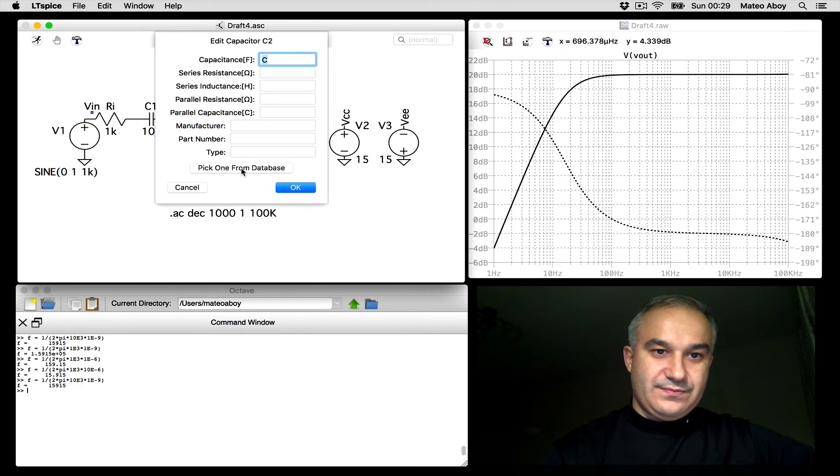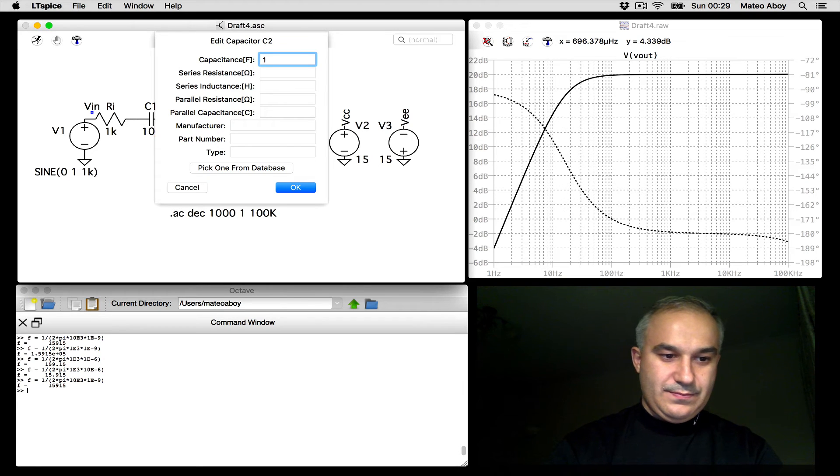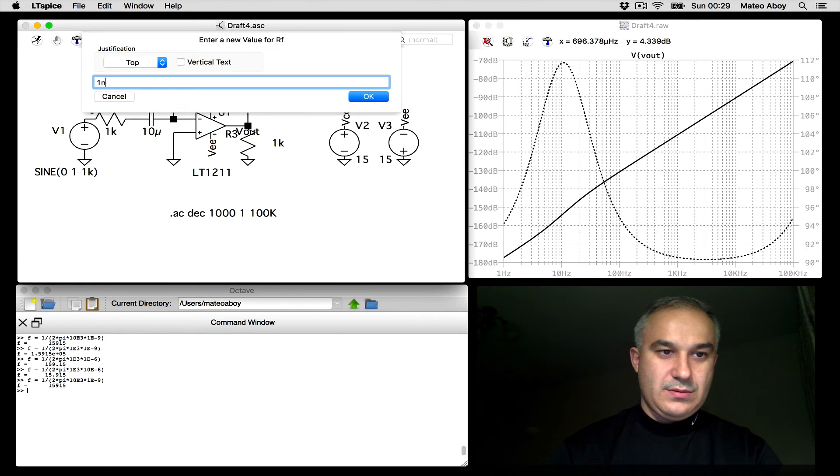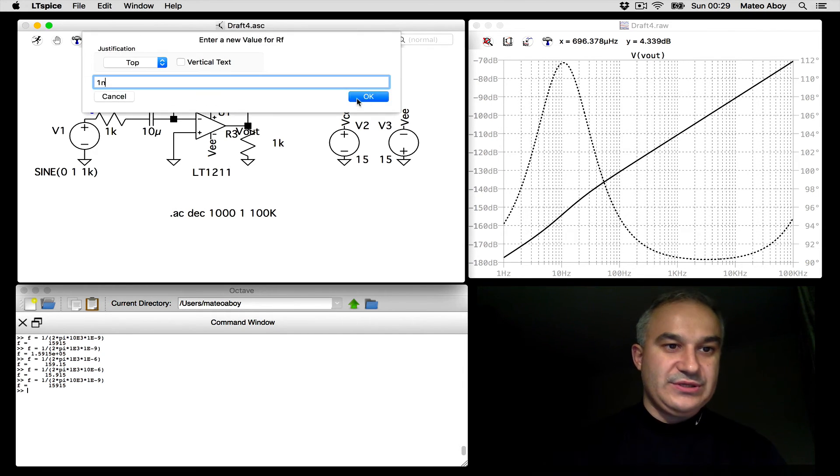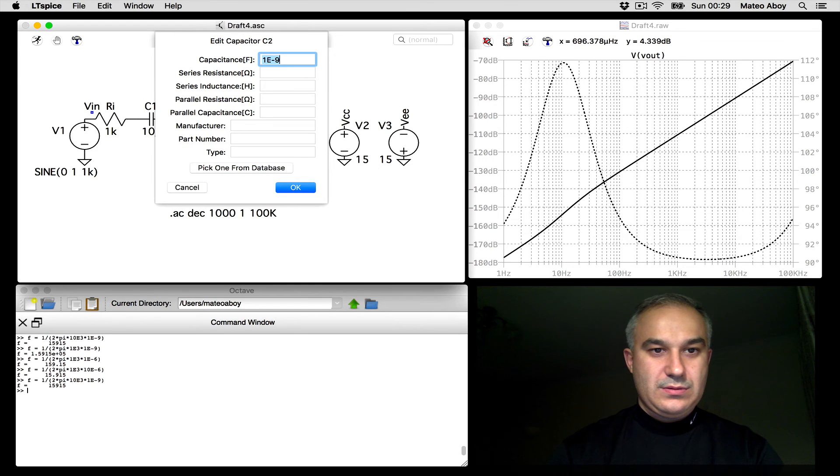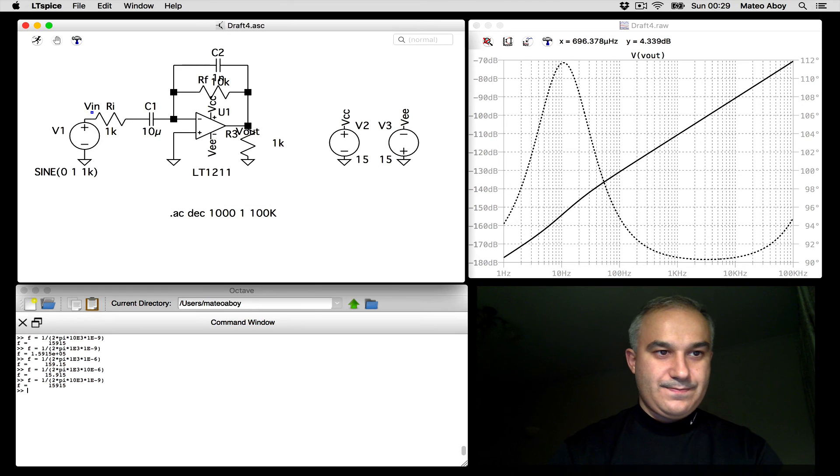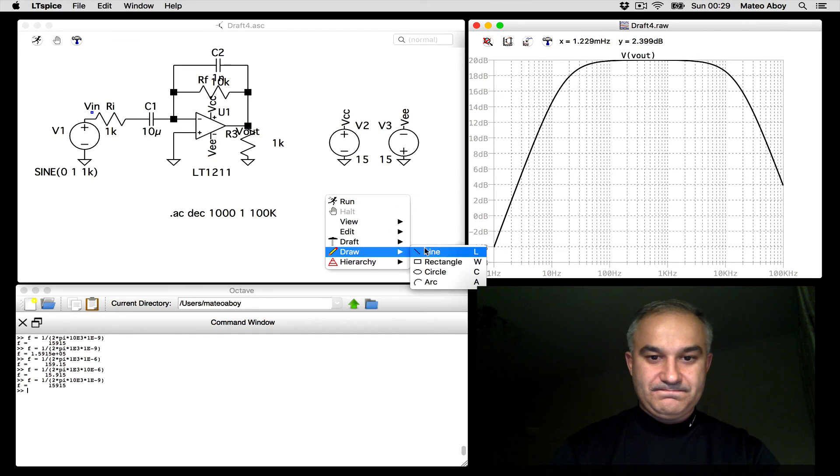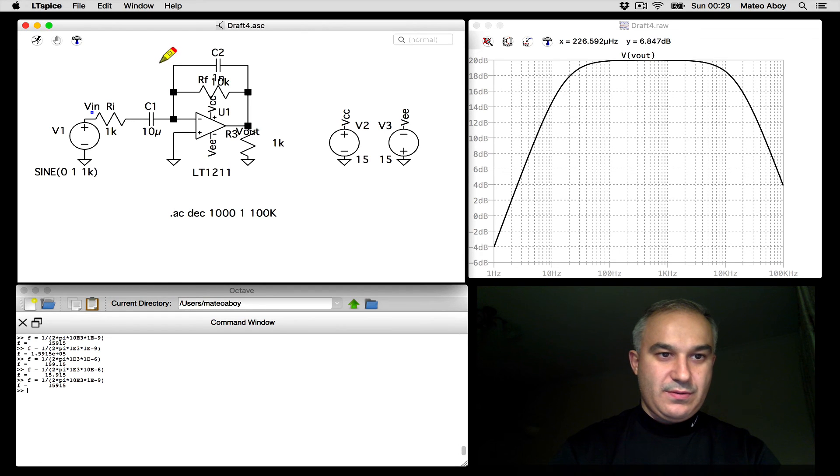Let's check here the value. For the low-pass filter. There we go. So we see that we can create a high-pass filter right here and a low-pass filter right here. And then we still have the gain of RF over RI.